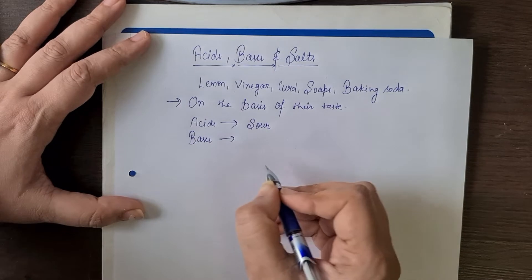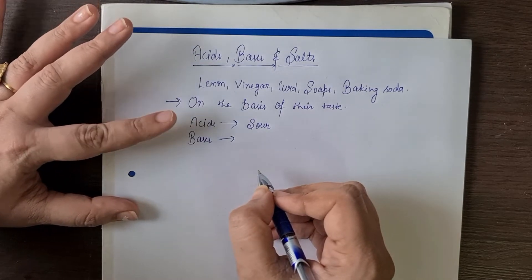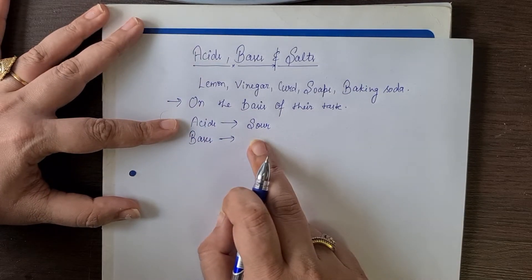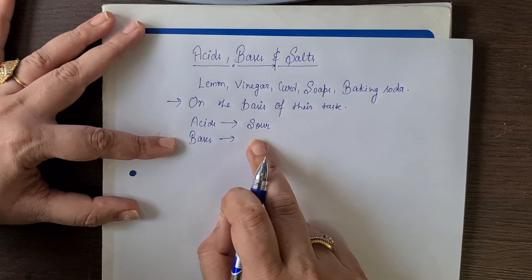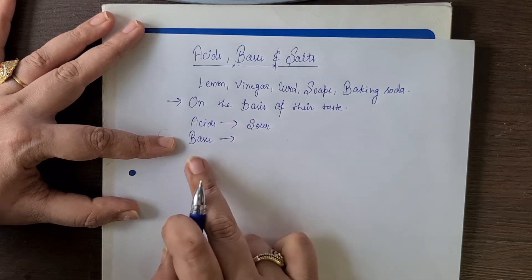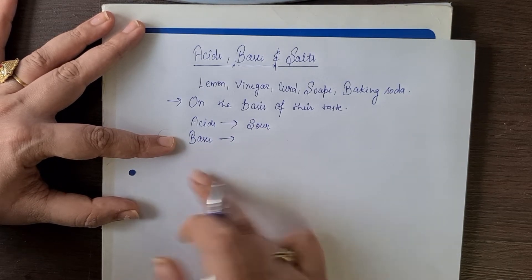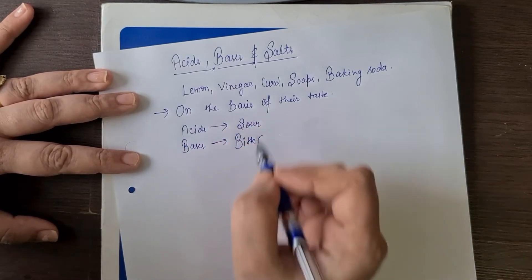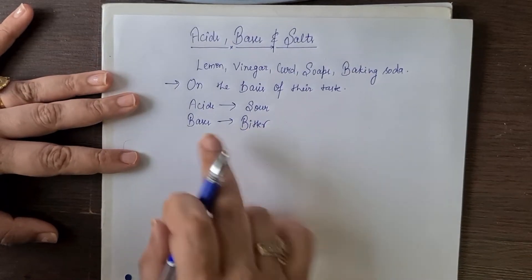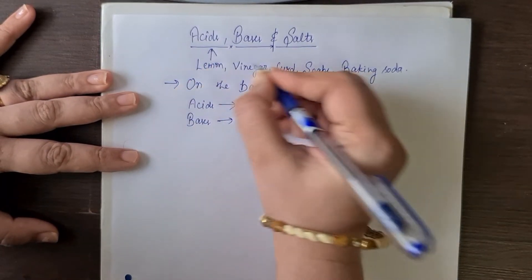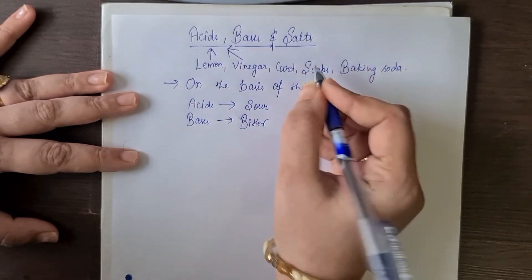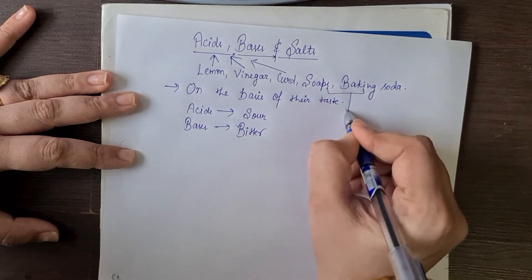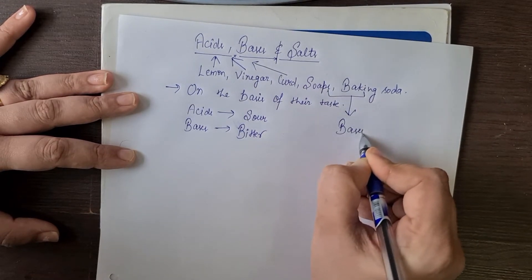All the substances which have an acidic nature are sour in taste, and all the substances which have a basic nature are bitter in taste. Lemon is acidic, vinegar is also acidic in nature, curd is also acidic in nature, and soaps and baking soda are both bases — they have basic properties.